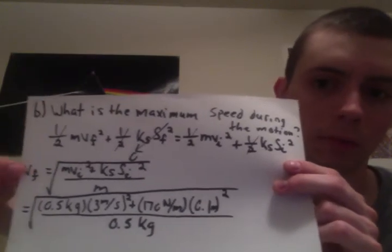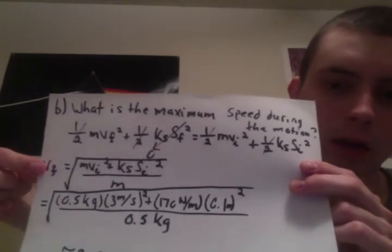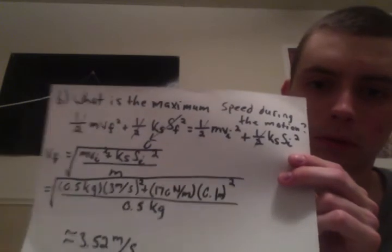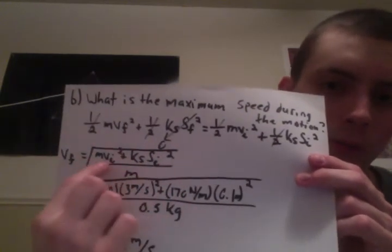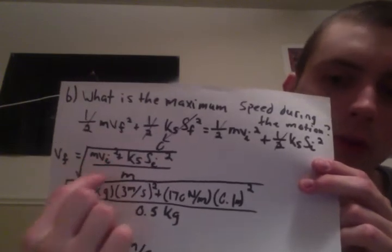When we solve for this final velocity here, when we isolate that, we get this form here. When we plug in the values for everything else, the mass, I think that's initial velocity.